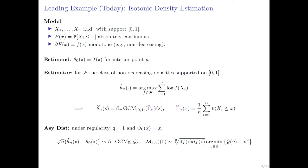The generic result specializes to this simple problem: Q will be 1 because the first derivative of the density is non-zero by assumption. The rate of convergence is cube root, and you converge to a particular law known as the Chernoff distribution. In this case you have a pivotal law up to scale, where the scale depends on certain features of the data-generating process — the density, the derivative of the density, and so on. This is standard textbook material.